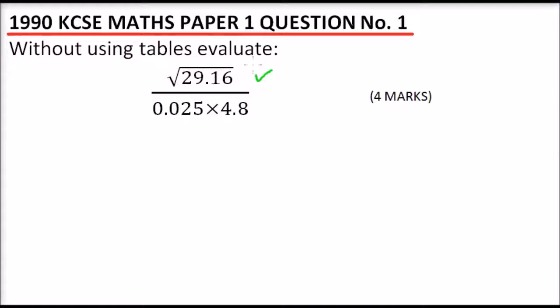Looking at the number here, you can use guesswork and say if you look at the last number point 16, it means maybe possibly our number ends with 4. So we take 5.4.